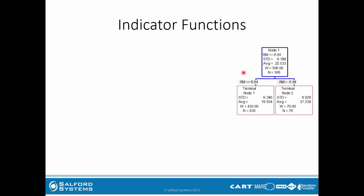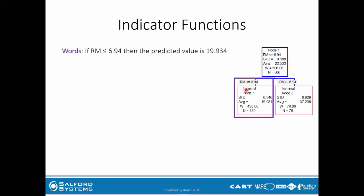Here's our first example with just two nodes. Sometimes this type of tree is called a stump because there's only one split. Looking at terminal node 1 in this purple box: if RM is less than or equal to 6.94 — this condition comes from the split in the tree — then the predicted value is 19.934, which is the average. Mathematically, we write I(RM ≤ 6.94) multiplied by the predicted value of 19.934.